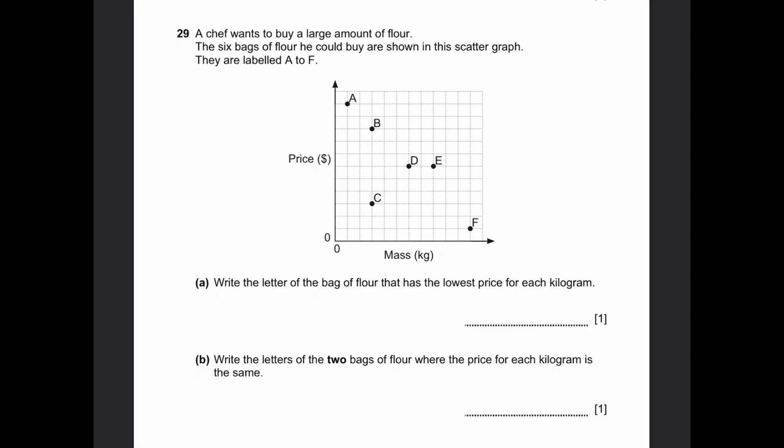Question 29. A chef wants to buy a large amount of flour. The six bags of flour he could buy are shown in this cartograph. They're labeled A to F. Part A: Write the letter of the bag of flour that has the lowest price for each kilogram. Well, that's definitely going to be bag F, since bag F has an extremely high mass value, although it's not given, but we know it's extremely high since it's at the end of the axis. But then the price value is only one unit for a large amount of mass. So the lowest price for each kilogram is definitely F.